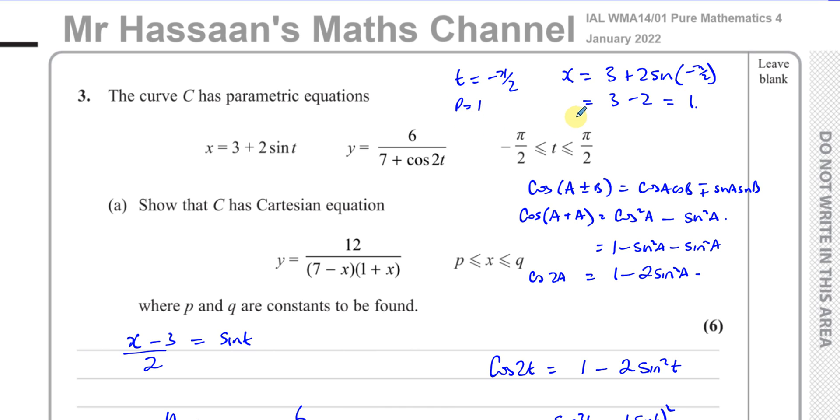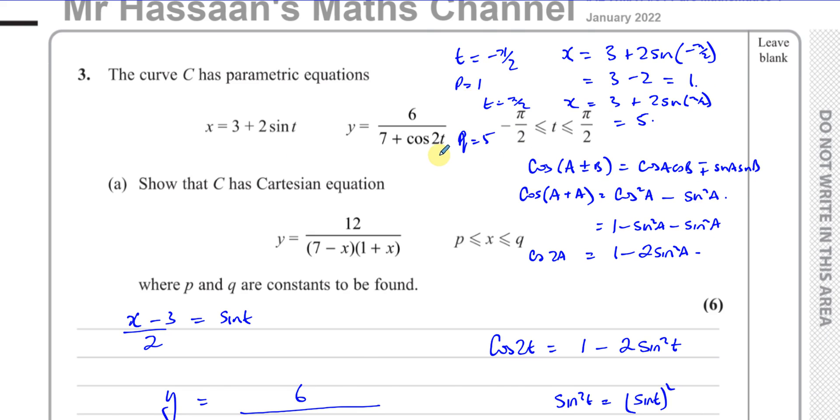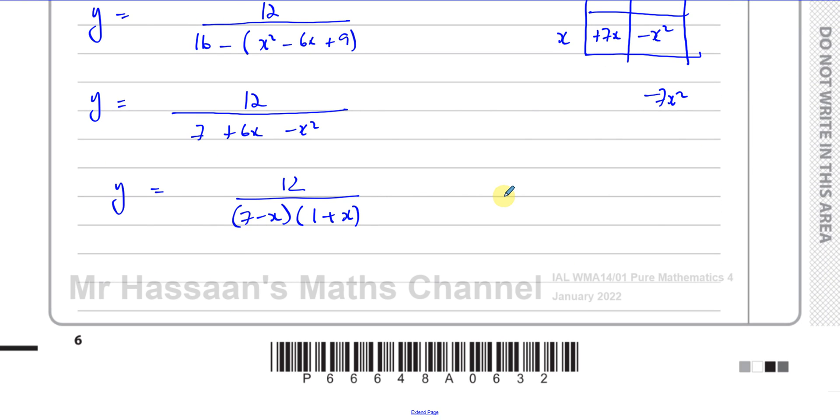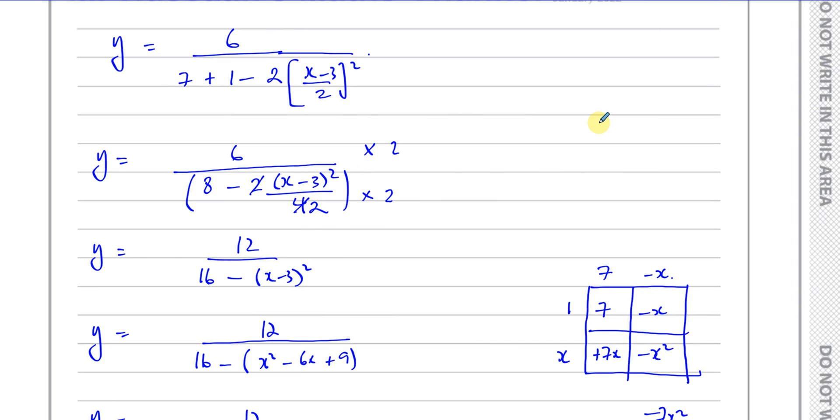And when T is equal to pi over 2, we have X is equal to 3 plus 2 times sine of pi over 2. Now, the sine of pi over 2 is 1. So this is going to be 3 plus 2, which is 5. So we can say that Q is equal to 5. So we can write the X between 1 and 5 now. So we can say that X is between 1 and 5. So that's something we have to write down.